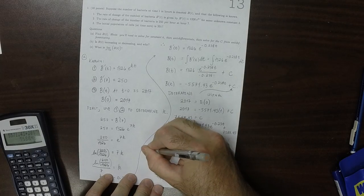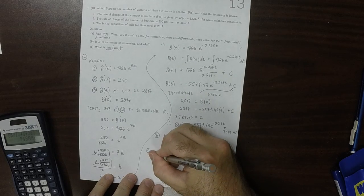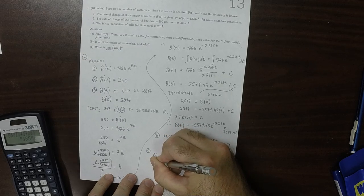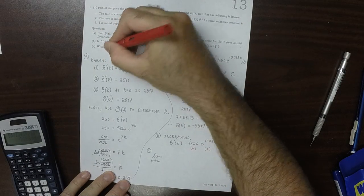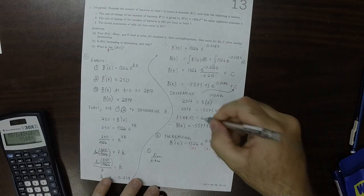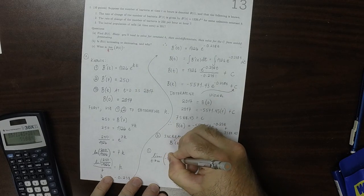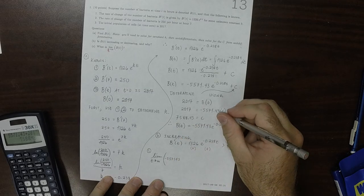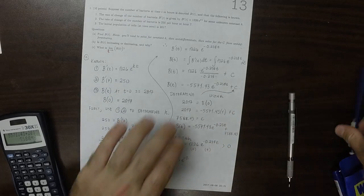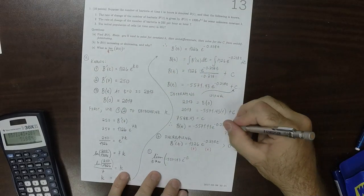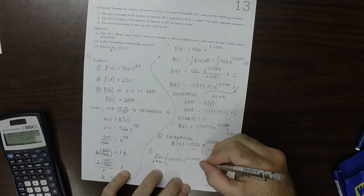For part C, what happens in the limit? Well, the limit as t goes to infinity, that should say t, the limit as t goes to infinity of that expression, that will be negative 5,571.43 exponential negative 0.238 t and then add 7,588.43.